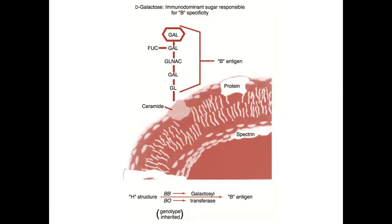For individuals who are blood group B, the B gene codes for the production of galactosyltransferase, which attaches the immunodominant sugar D-galactose to the H substance previously placed on the type 2 precursor through the action of the H gene. This D-galactose sugar is responsible for B-specificity or blood group B expression.